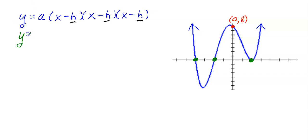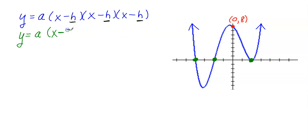Let's rewrite this equation as Y equals — bring down your A, your parentheses, and your X, then minus. You're going to replace each H with one of the X intercepts, reading from left to right. This X intercept over here is negative 4 — 1, 2, 3, 4 to the left — so I'm going to replace this H with negative 4.